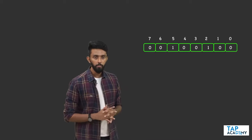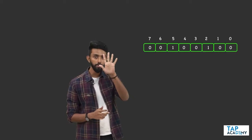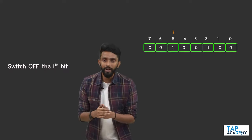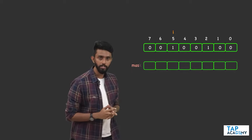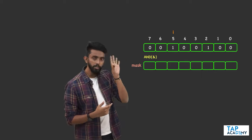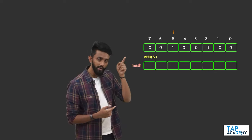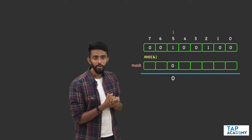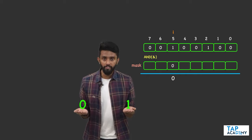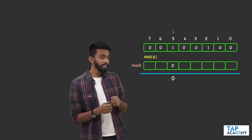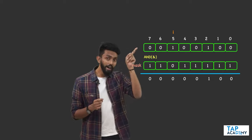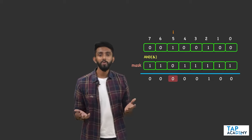Now let us assume the ith bit this time is five. It is on — the question asks me to switch off the ith bit. You need a mask and the AND operation. The bit at position five is one and it has to become zero. If I do AND operation, I need the other operand to be zero, because one AND zero is zero. None of the other bits must change, and in AND, the bit with no effect is always one — so left and right of the mask must all be ones.